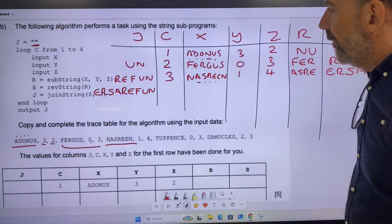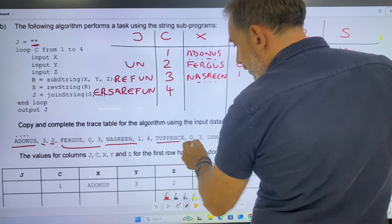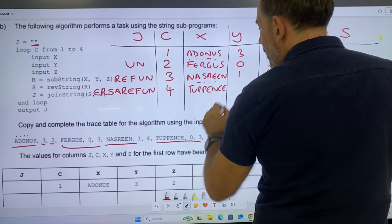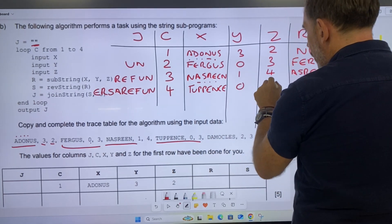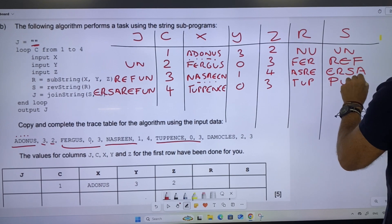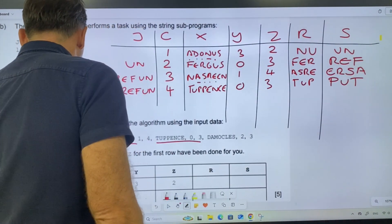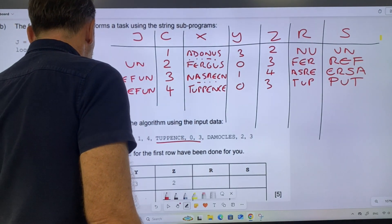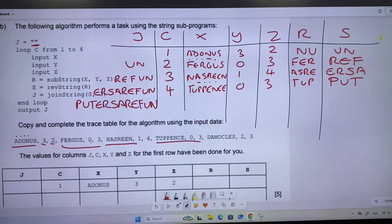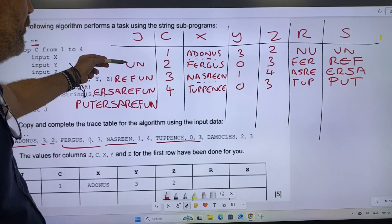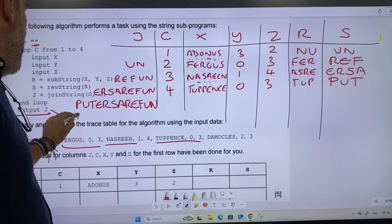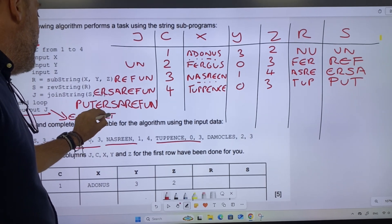Position four. We've got Tuppence: T-U-P-P-E-N-C-E. So Tuppence, we're taking the first value is zero, and we're taking three values, so I'm going to go T-U-P, and I'm going to go P-U-T. So, P-U-T-E-R-S-A-R-E-F-U-N. Now we've gone around four times: position one was empty, position two, position three, position four. So position four, the output, output J, would be, in this case, P-U-T-E-R-S-A-R-E-F-U-N.